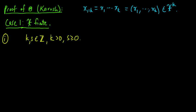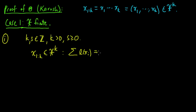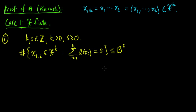Let's think about the set of all sequences x₁ to xₖ with the following property: all such sequences for which the sum of the lengths equals s, where the sum runs over i from 1 to k. I claim that the size of this set — the number of elements in it — is less than or equal to b^s.